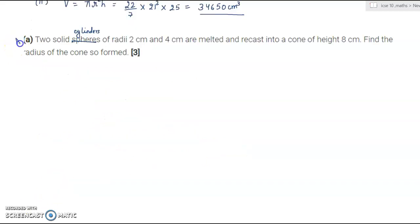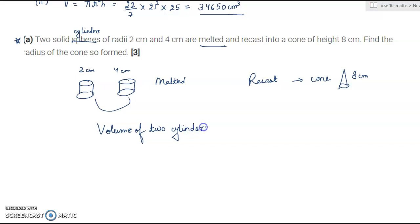This is an important question and it is repeatedly asked in board examination. Two solid cylinders of radius 2 centimeter and 4 centimeter are melted and recast into a cone of height 8 centimeter. You have to find the radius of the cone so formed. In this case, you'll have to keep the volume of these two cylinders equal to the volume of cone formed. Every time this question comes, melting and recasting question, you'll have to put both the volumes equal.